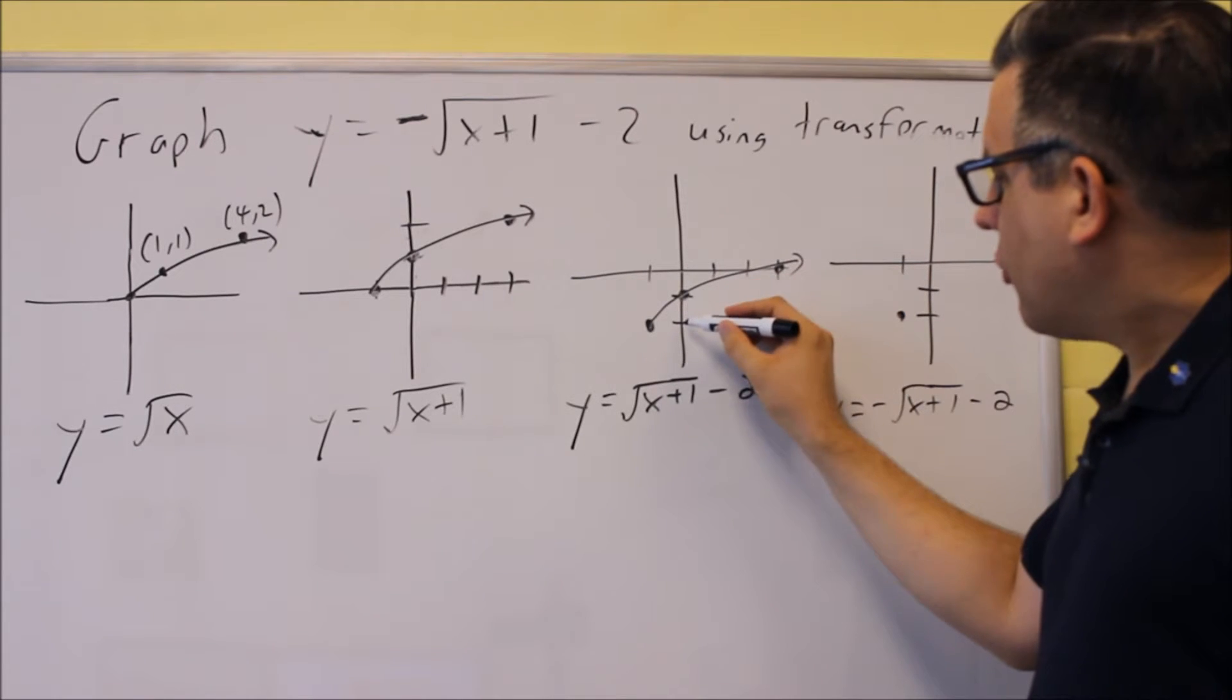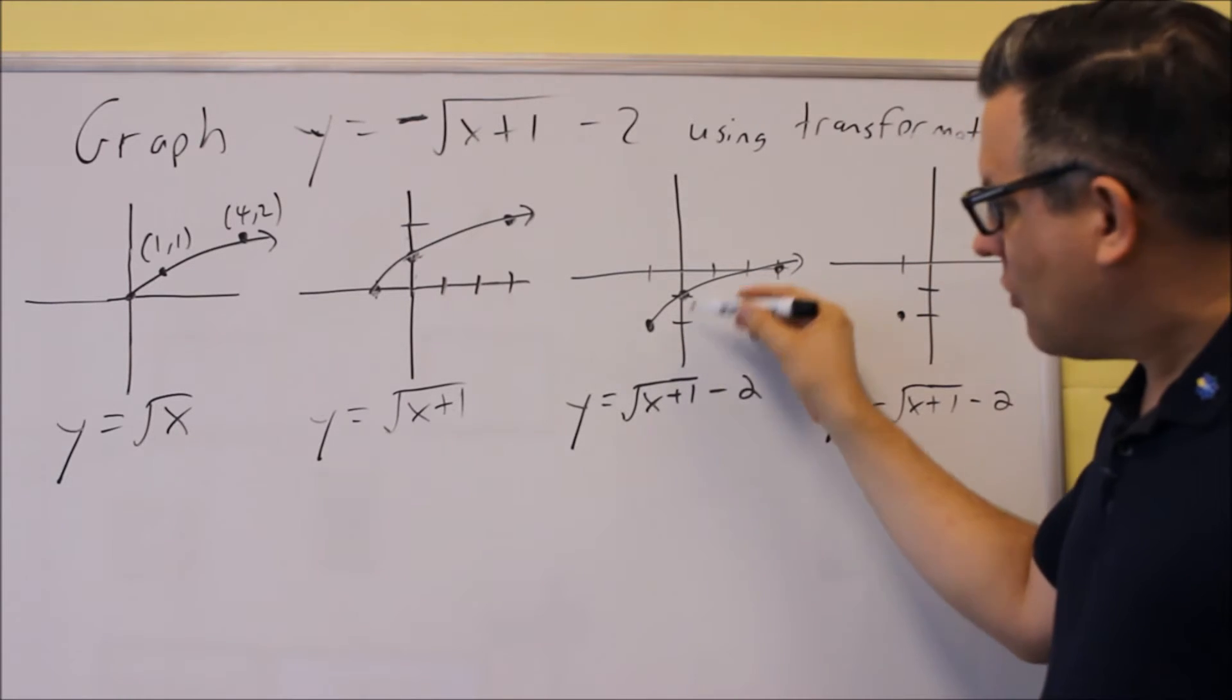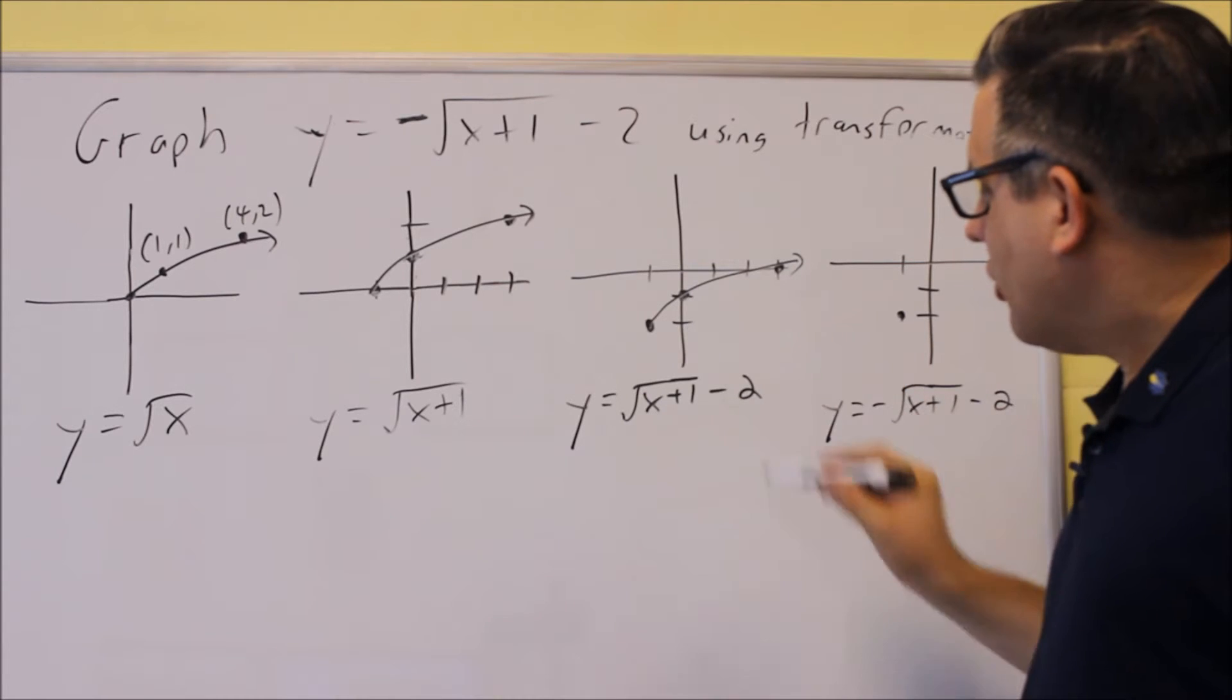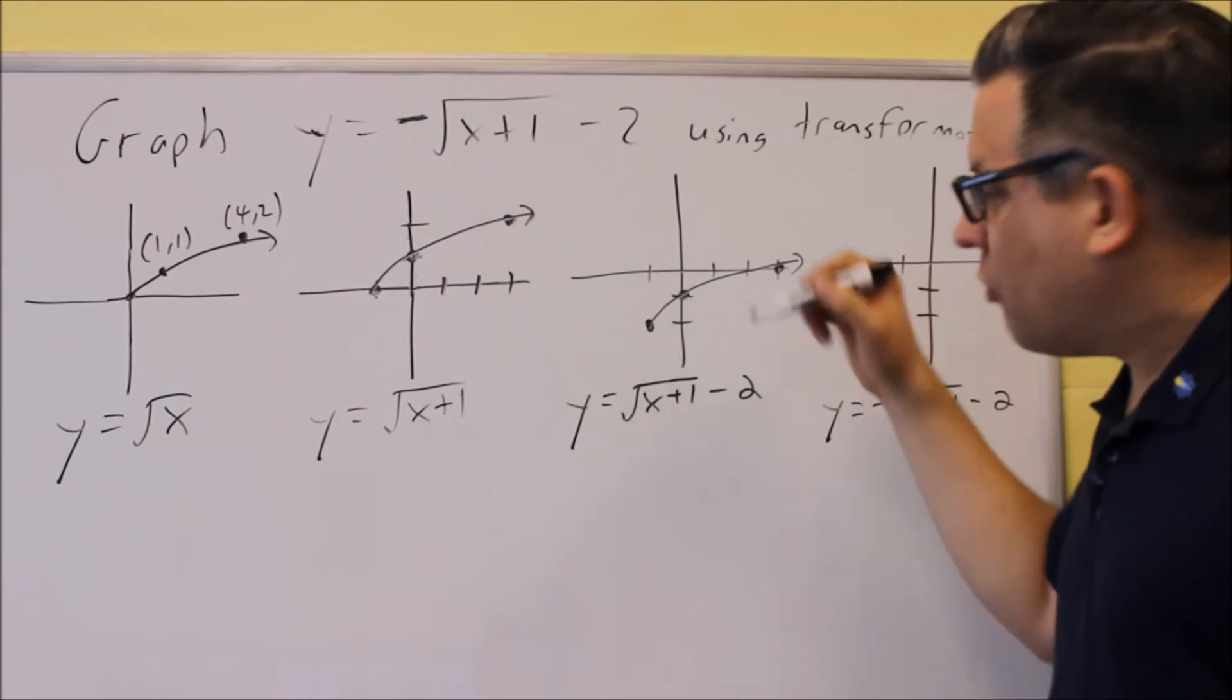So the whole thing flips upside down, which means instead of it going through this point here, it's now going to reflect and go down this way. So it flips over the horizontal axis. You can imagine the horizontal axis going right through negative 2. That's essentially what we're doing here.